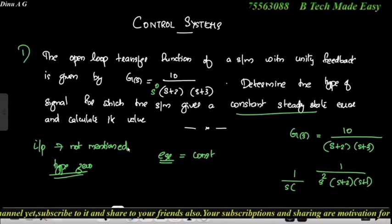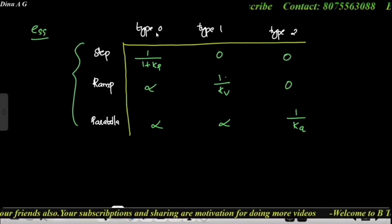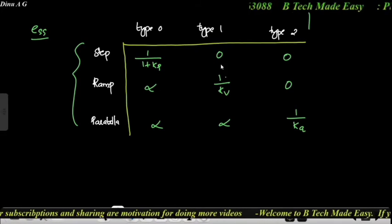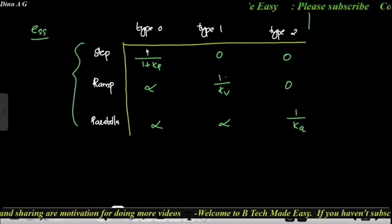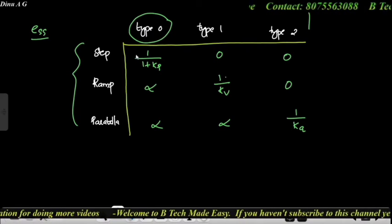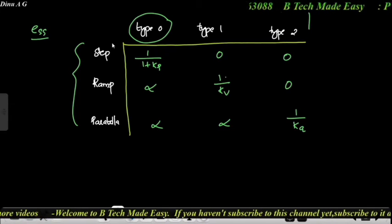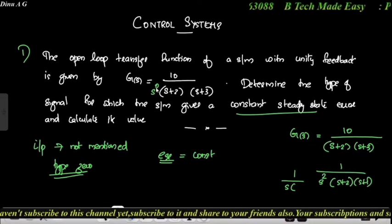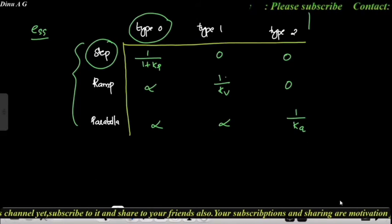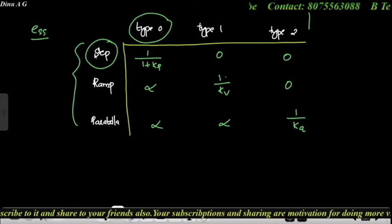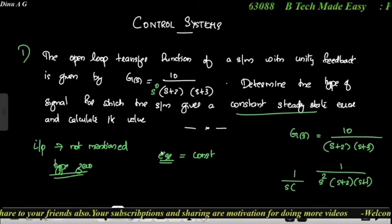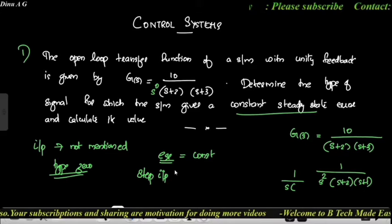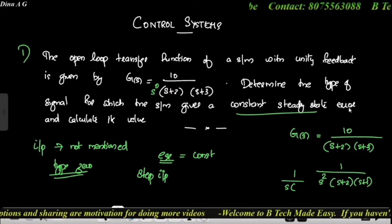Type 0 gives a constant steady state error for step input. We have a chart: step, ramp, and parabola are the three signal types corresponding to Type 0, Type 1, and Type 2 systems respectively. In this case we identify Type 0, and the corresponding input is the step input.